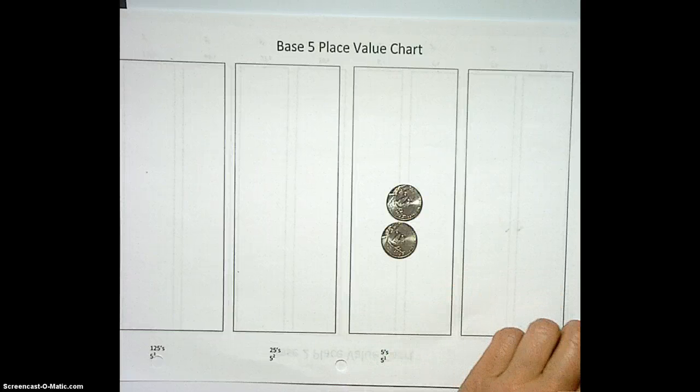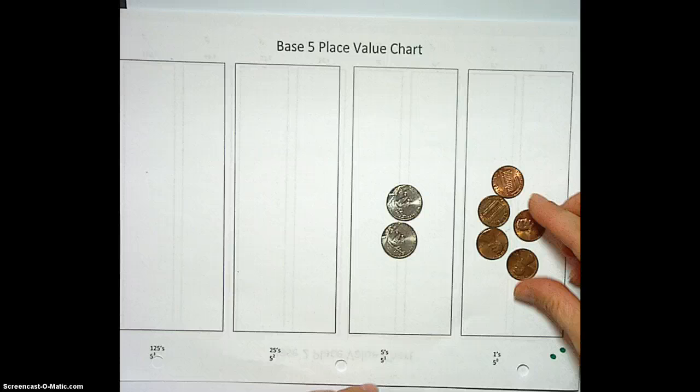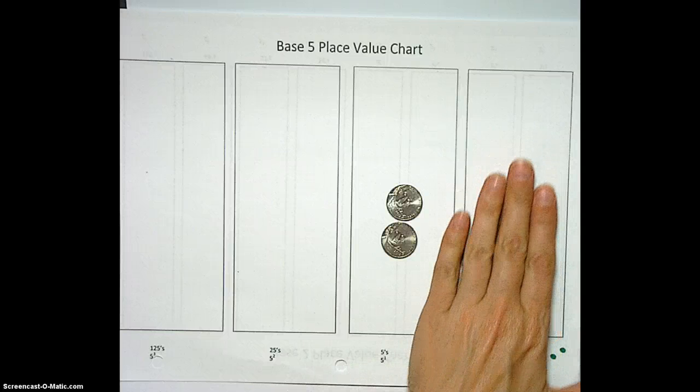So from 2, 0, we're going to go 2, 1, 2, 2, 2, 3, 2, 4, 3, 0. So let's make another trade. Get rid of that, put in that. So 3, 0.